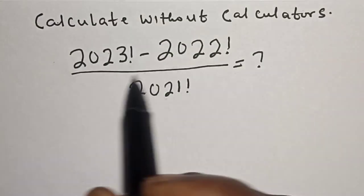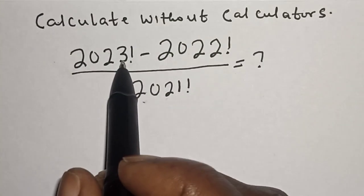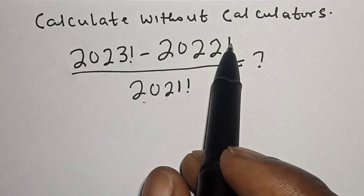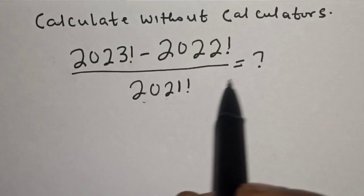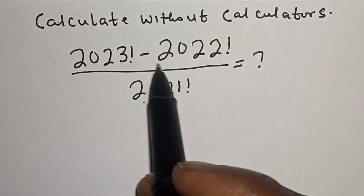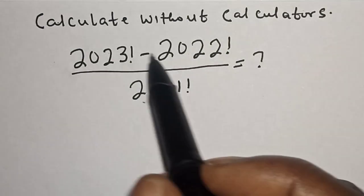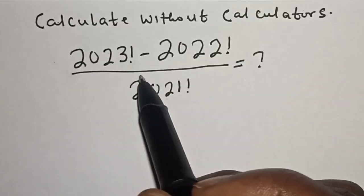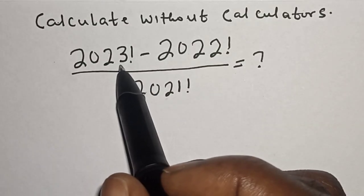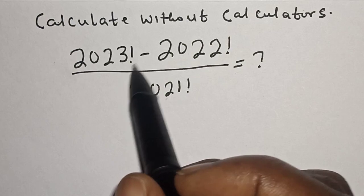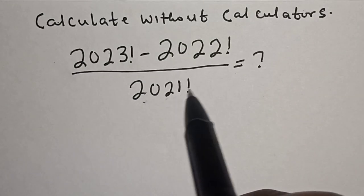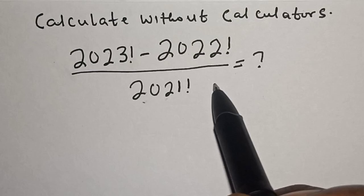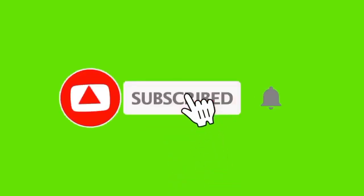Calculate without a calculator: 2023 factorial minus 2022 factorial, divided by 2021 factorial. Hi everyone, welcome to my class. In this class we want to simplify this math problem: 2023 factorial minus 2022 factorial divided by 2021 factorial.